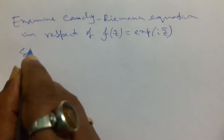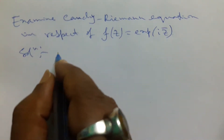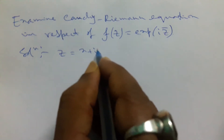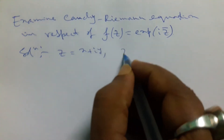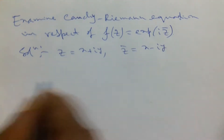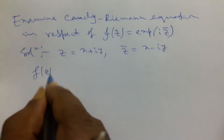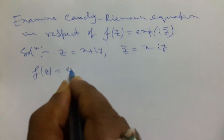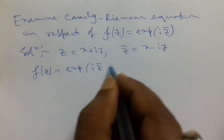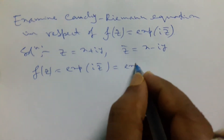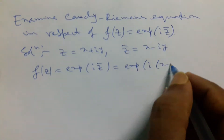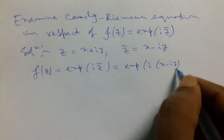Now let us take the part of solution. Z equals x plus iy, therefore z̄ equals x minus iy. So f(z) = e^(iz̄) = e^(i(x minus iy)).